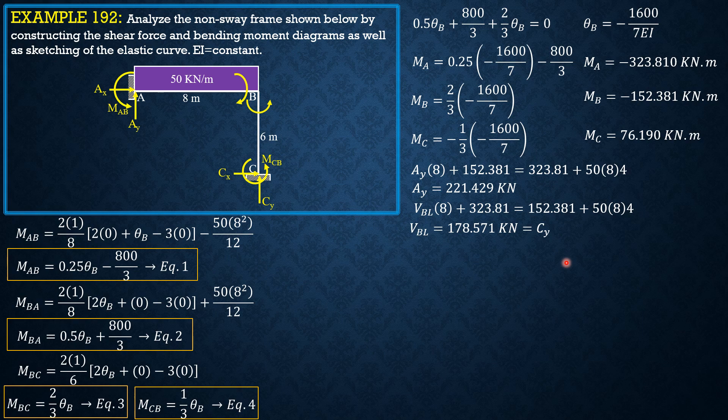Then for Ax, we sum up moments about B for this column. So Cx times 6 plus MCB, which is 76.19, plus MBC, 152.81, equals 0.